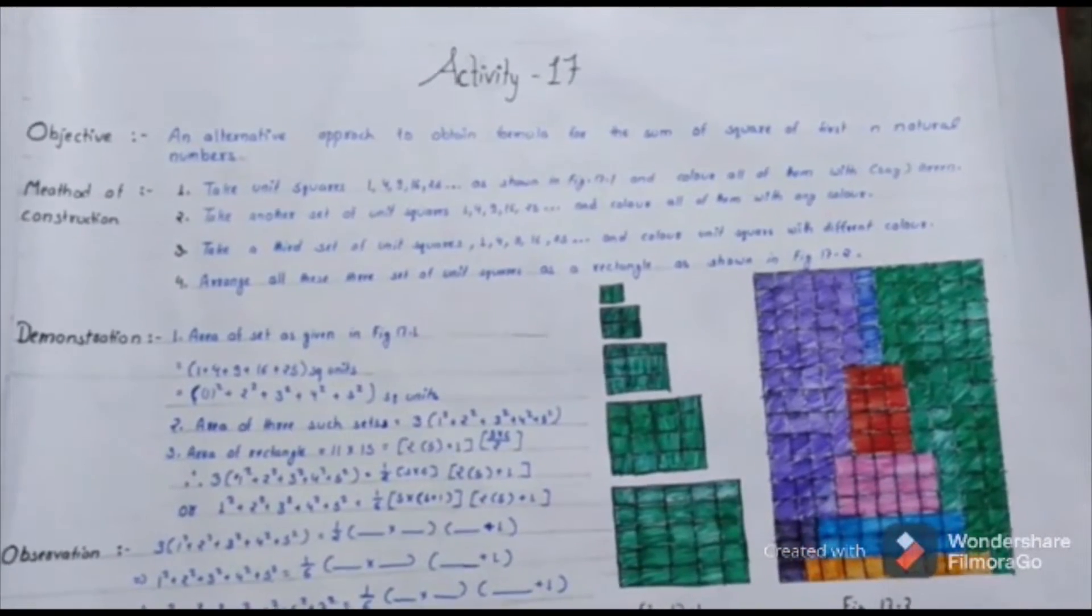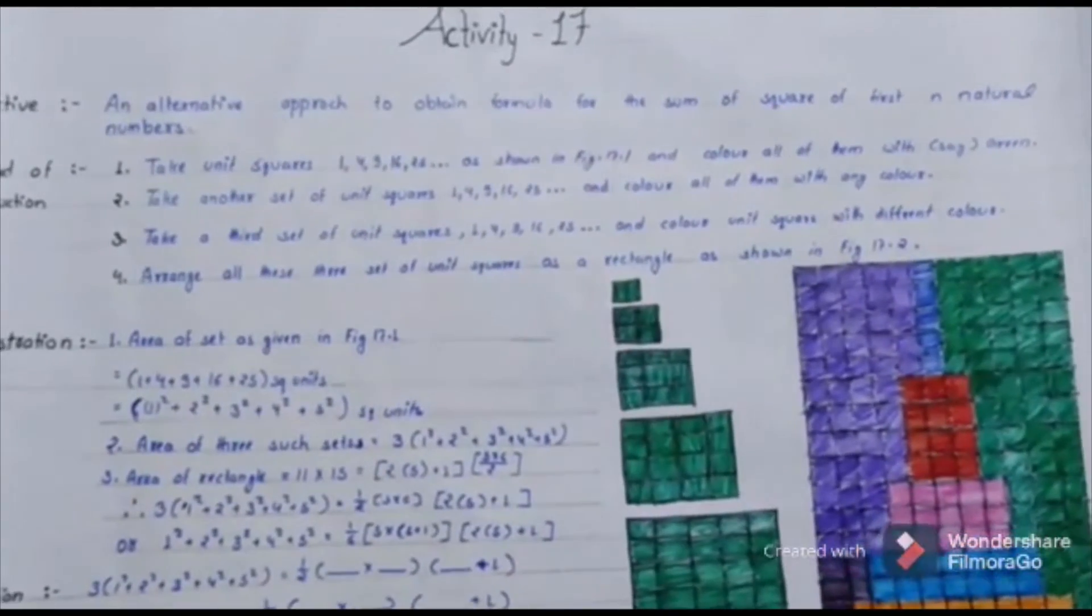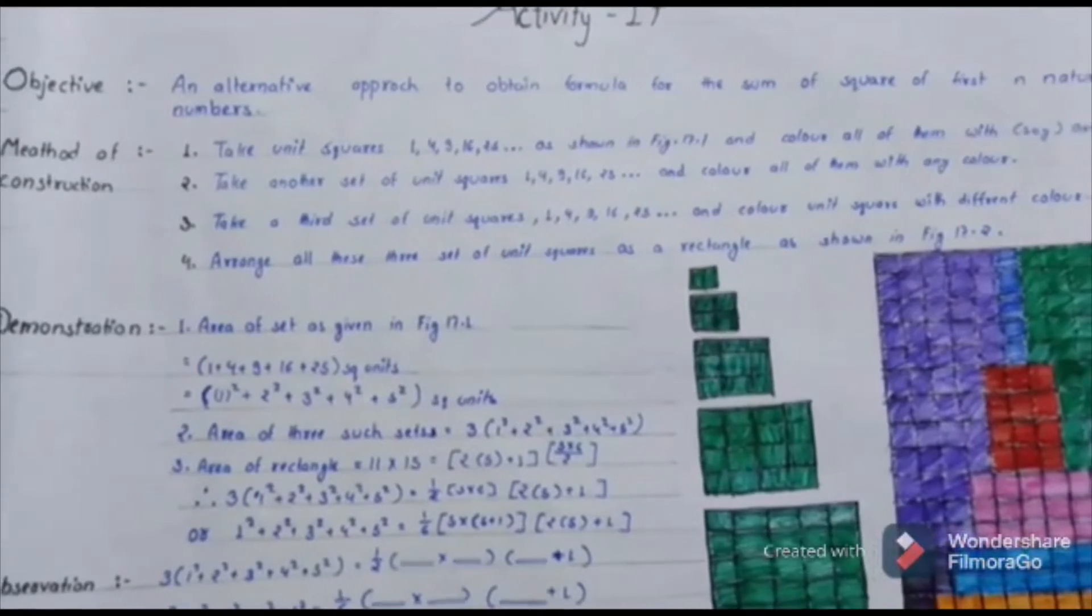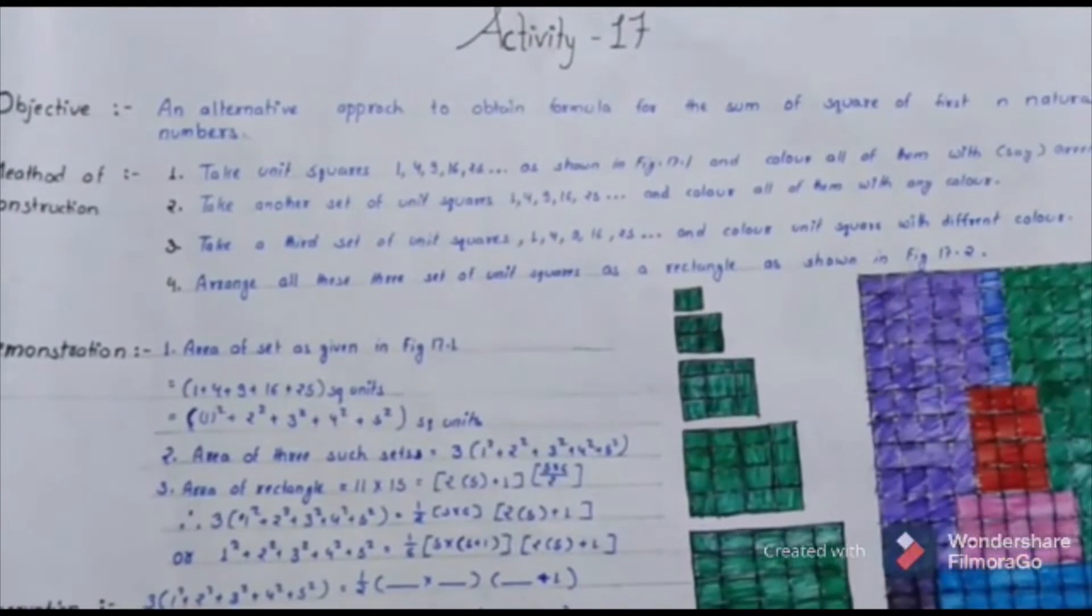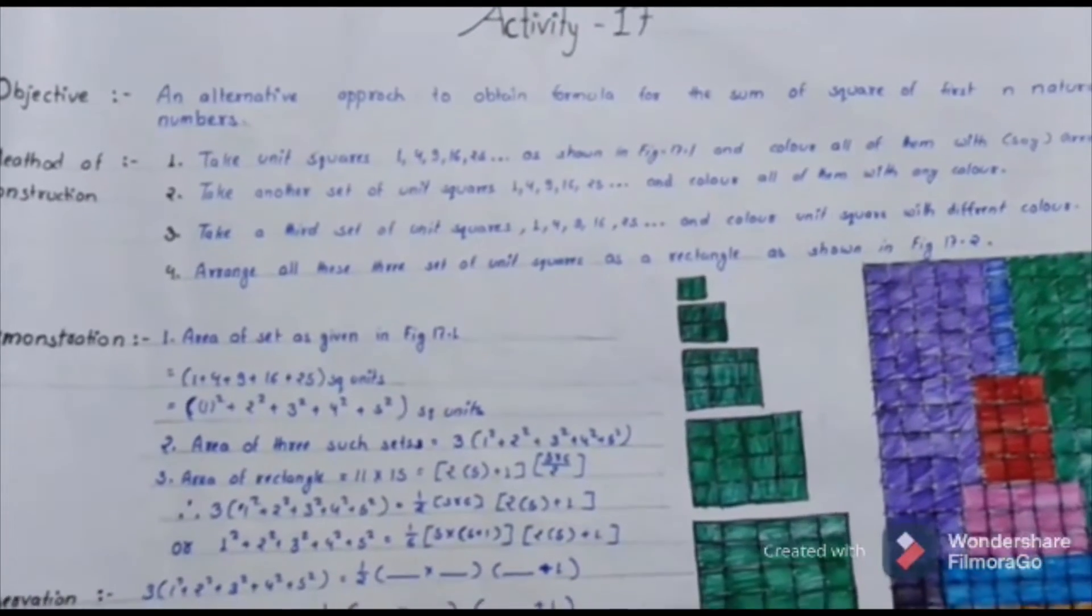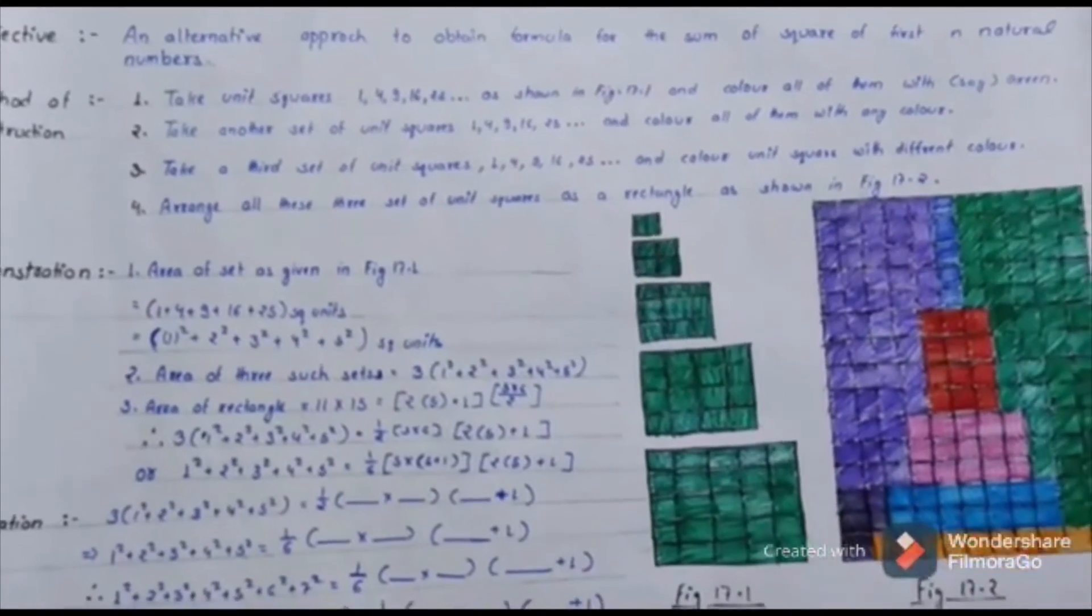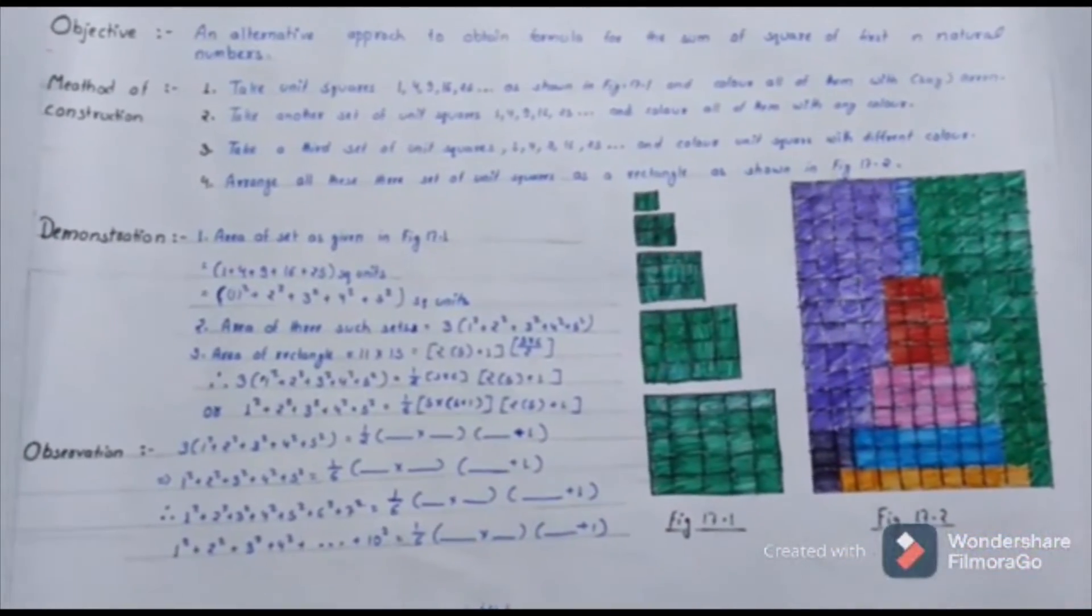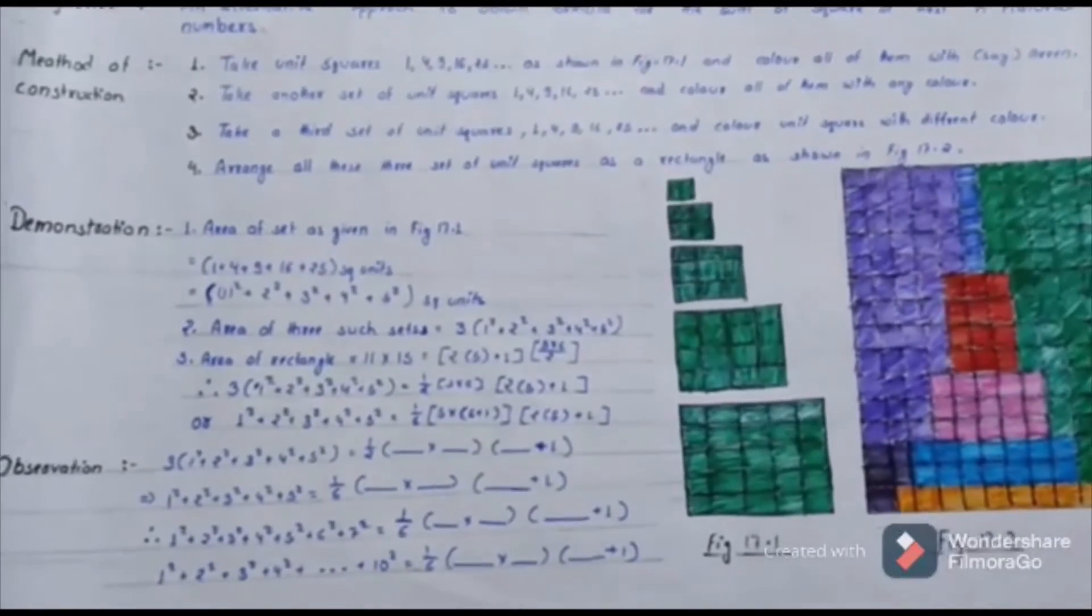Take another set of unit squares containing 1, 4, 9, 16, and 25 and color all of them with any specific color. Take a third set of unit squares containing 1, 4, 9, 16, and 25 and color all of them with different colors.